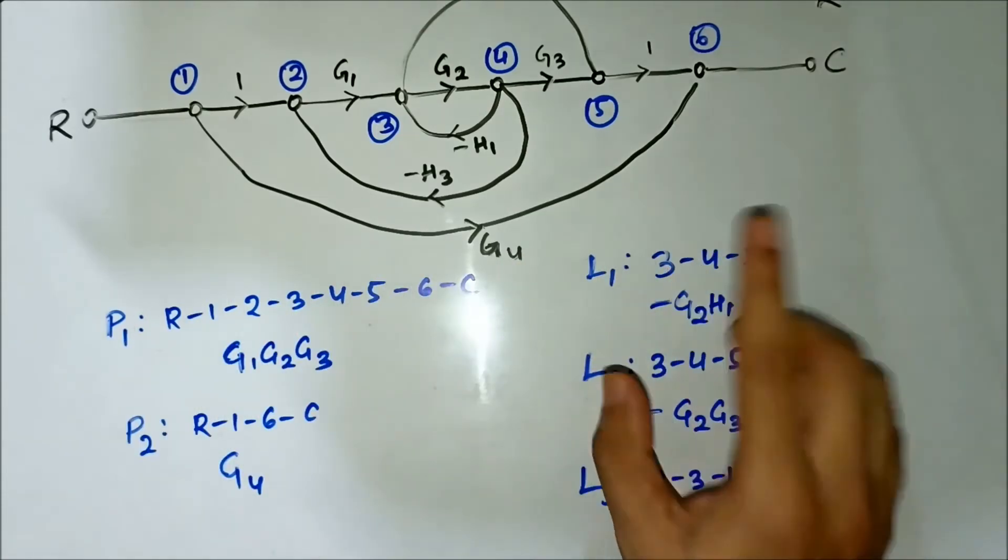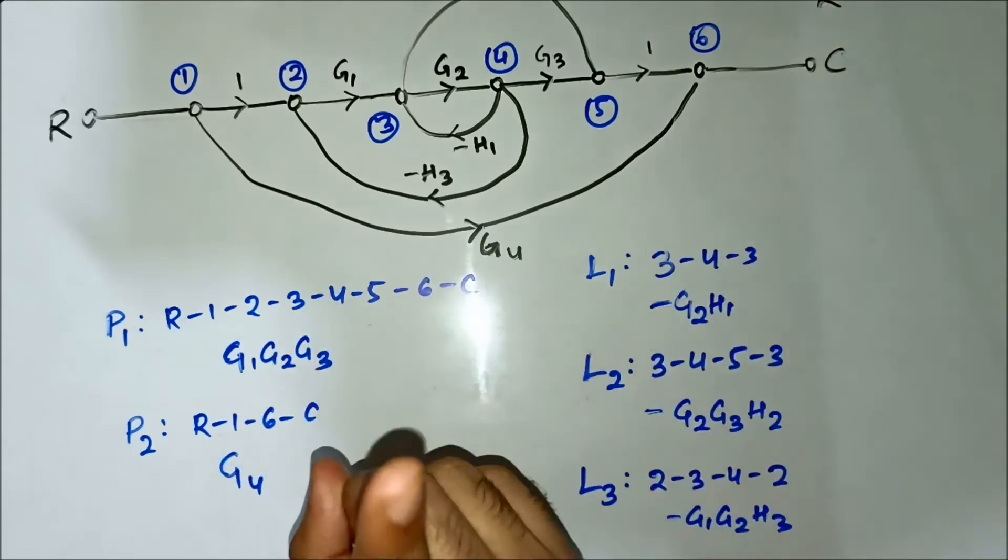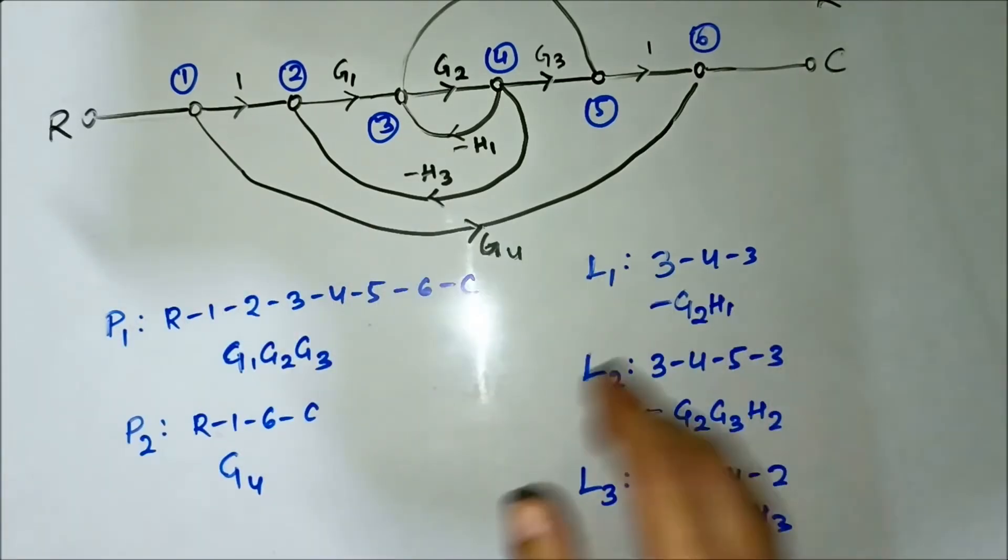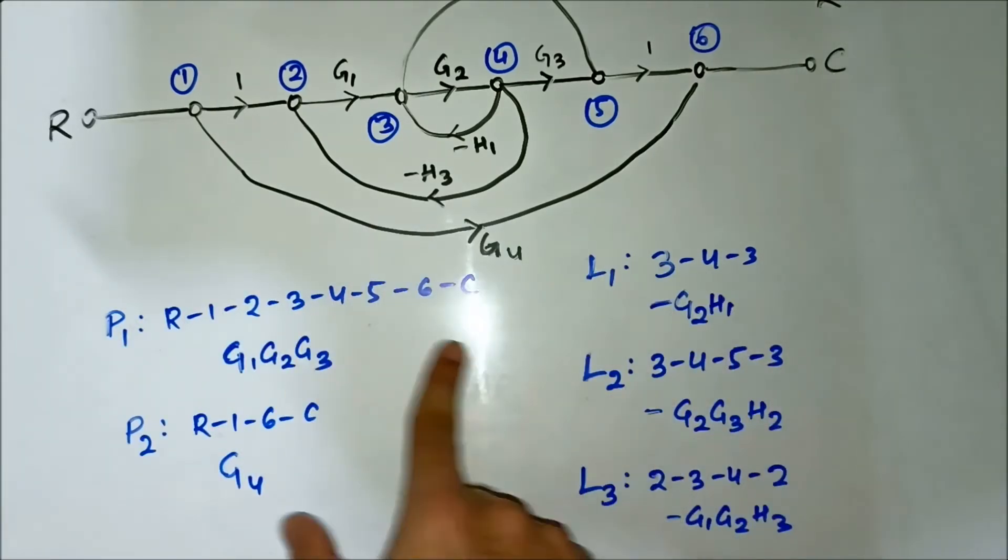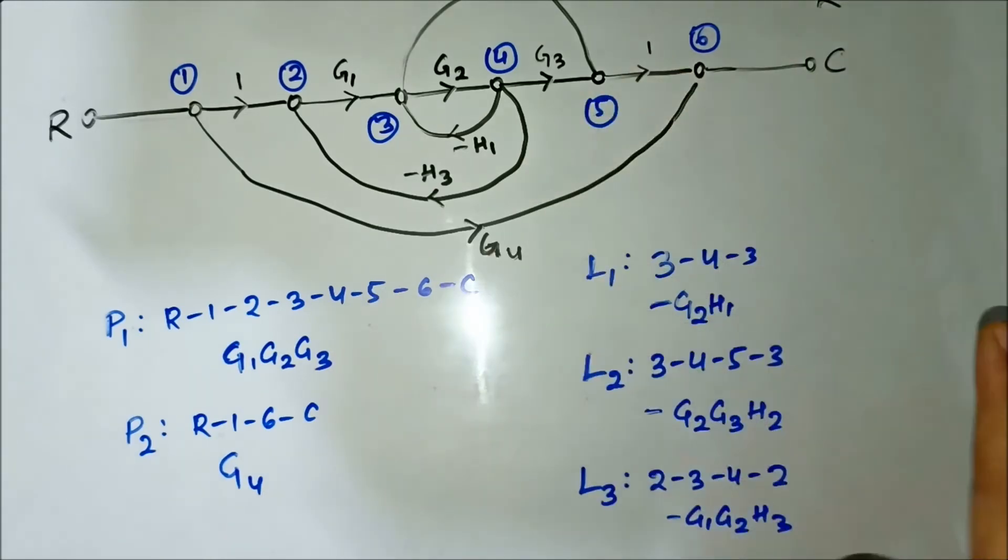Comparing it with L1, identifying common nodes: 3 is there, 4 is there. P1 is touching L1. Only 3 is sufficient - when you see one common node, it's enough to say that it is touching that loop. P1 and L2: it is touching. P1 is touching all the loops L1, L2, L3.